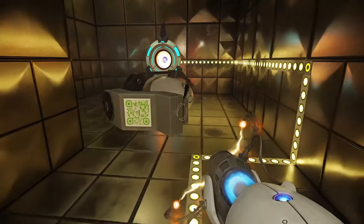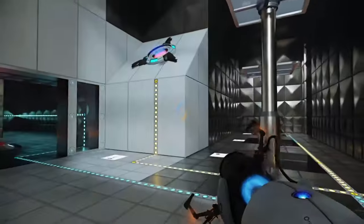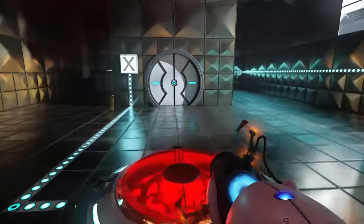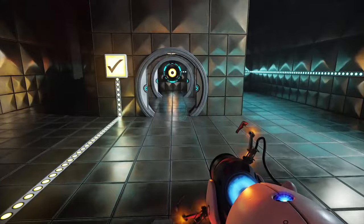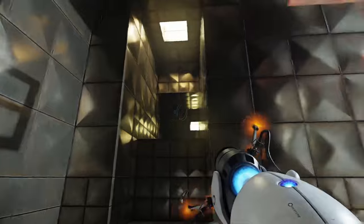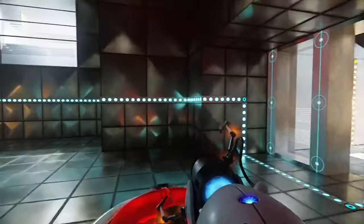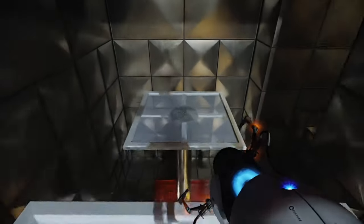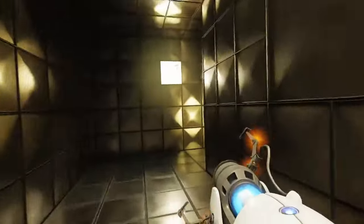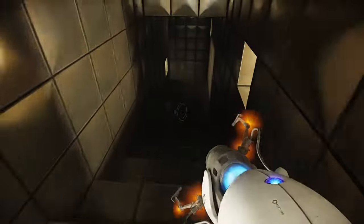There we go. The enrichment center reminds you that the weighted companion cube cannot speak. In the event that the weighted companion cube does speak, the enrichment center urges you to disregard its advice. I need more bullet thingies, right? Is it somewhere back in the beginning? Of course. This one. Okay, now we wait for it to pass. Nice, nailed it. Oh, the companion cube, no. Oh my gosh, almost left without him. Come with me, my friend.